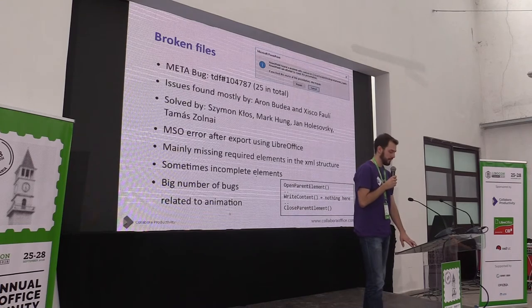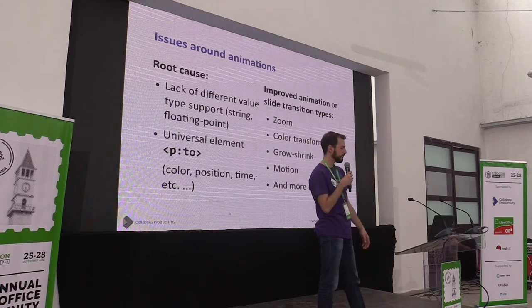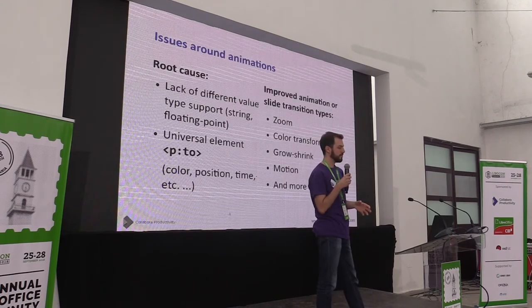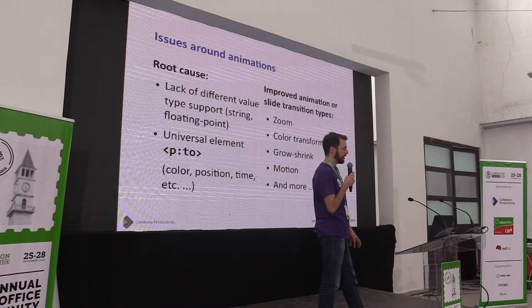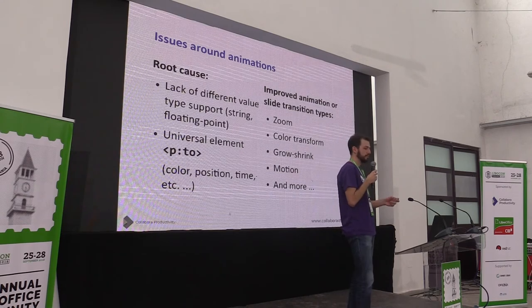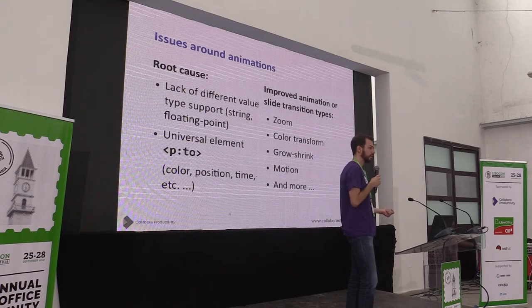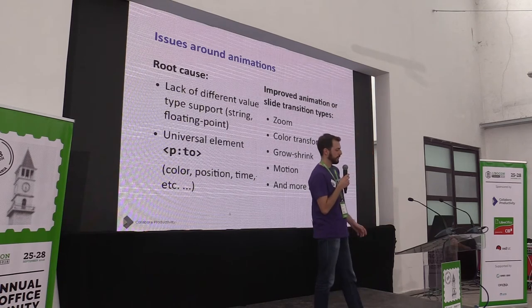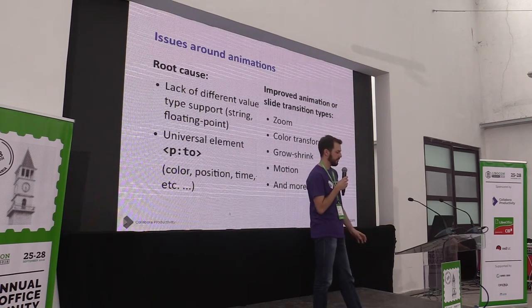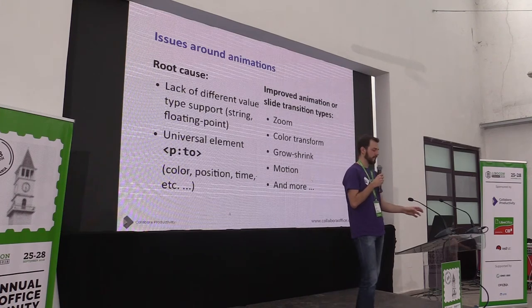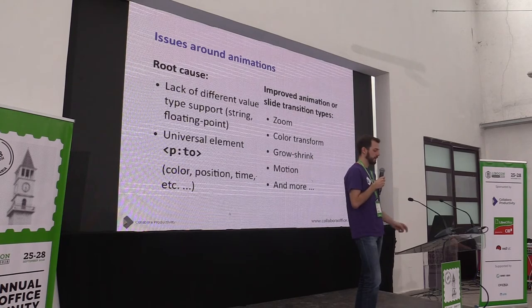Most of these cases were related to animations. We have many types of animations but only one structure using 'to' and 'from' elements. We can set many elements like color, transition, position, movement, or time — essentially everything in one element — but to represent the data we need many types of values.